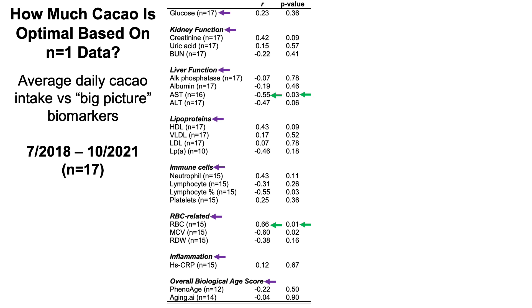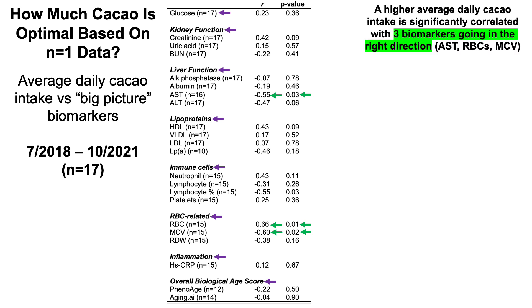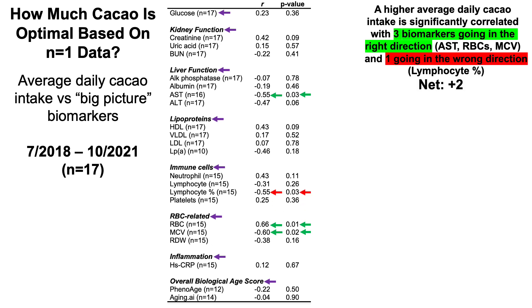Also going in the right direction: higher cocoa bean intake is associated with lower MCV (mean red blood cell volume), which increases during aging and is associated with increased all-cause mortality risk, so lower MCV is beneficial. That gives three biomarkers going in the right direction. Going in the wrong direction, the only statistically significant finding is that higher cocoa bean intake is correlated with a lower percentage of lymphocytes, which also declines during aging.